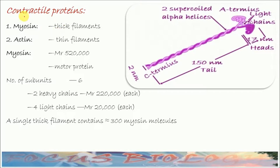Now, we will see contractile proteins. They are of two types. One is called myosin, another is actin. Myosin constitutes thick filaments while actin constitutes thin filaments. Here, this is the structure of myosin molecule. You can see it. This is a motor protein with a molecular weight of 520,000.